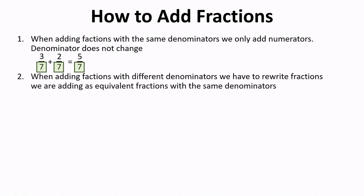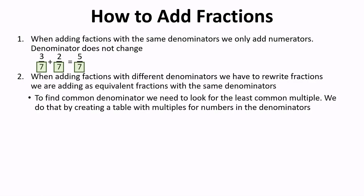When adding fractions with different denominators, we have to rewrite fractions we are adding as equivalent fractions with the same denominators. To find common denominator, we need to look for the least common multiple. We do that by creating a table with multiples for numbers in the denominators.